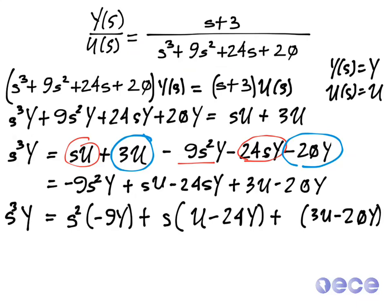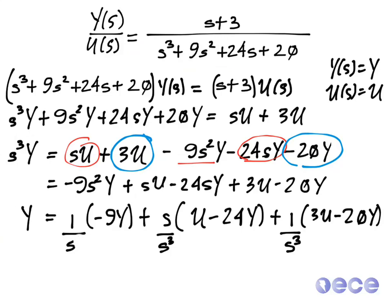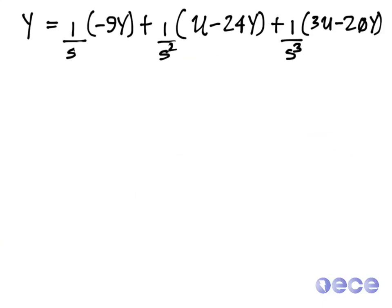What happens now is I'm going to take the s³ term and divide it through on the right-hand side. So my s³ piece is going to go away, and I'm going to divide by s³ here, and by s³ here, and by s³ here. You can see that I can simplify: s² over s³ becomes 1/s, s over s³ becomes 1/s², and I still have 1/s³ on the right-hand side. Now I'm going to move this to a new page to show how we can define some state for this system.